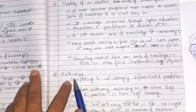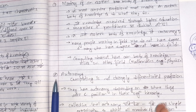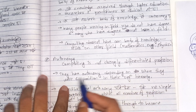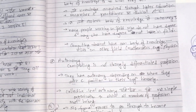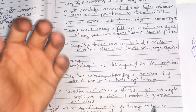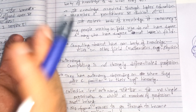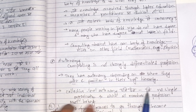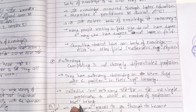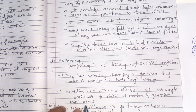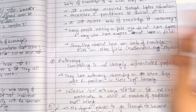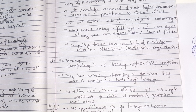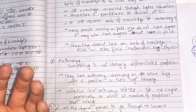Another characteristic is autonomy. Autonomy is not a strongly differentiated profession. They have autonomy depending on where they work and their position in the organization hierarchy. At the collective level, autonomy means there is no single organization to which all members of the profession must belong. They are not in a formal organization hierarchy; they have to become a computer professional hierarchy.